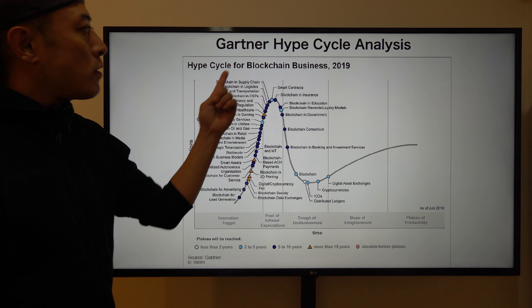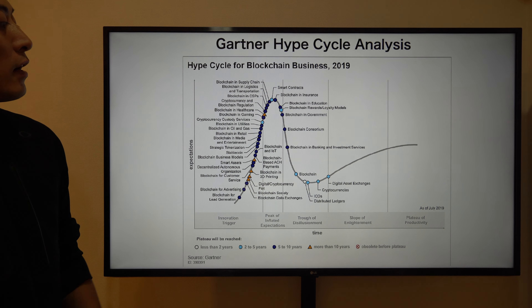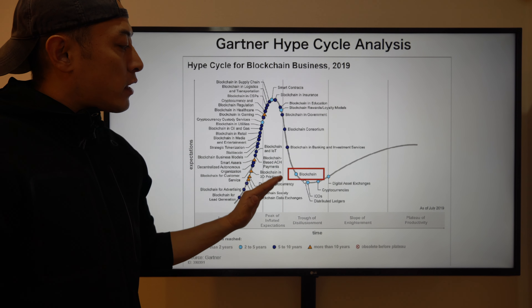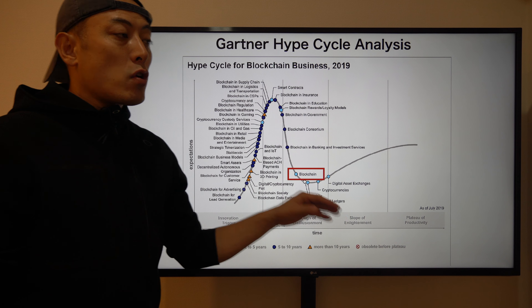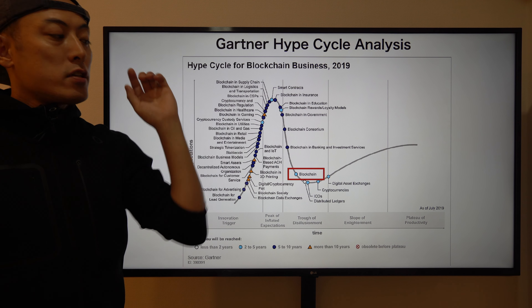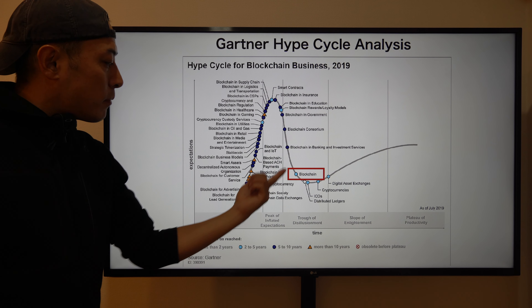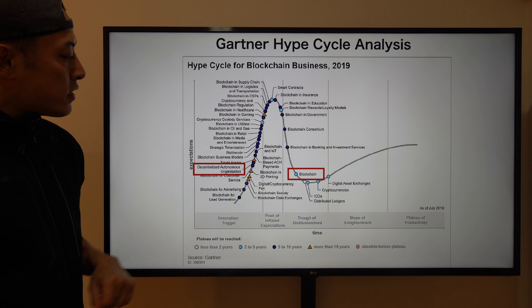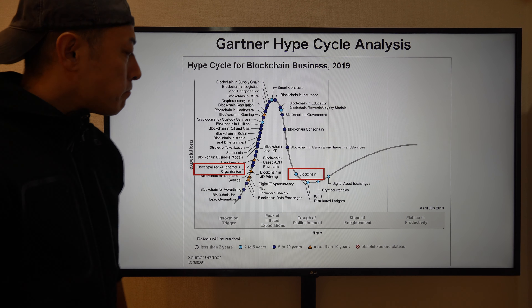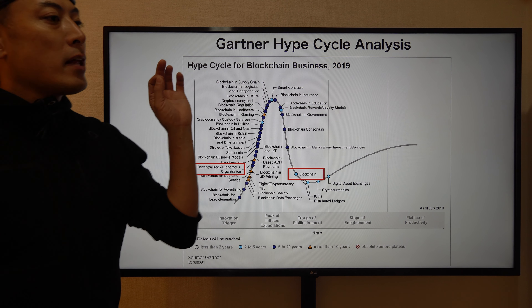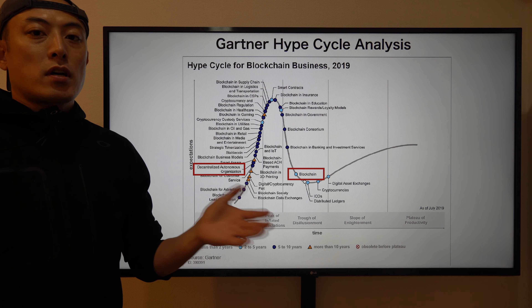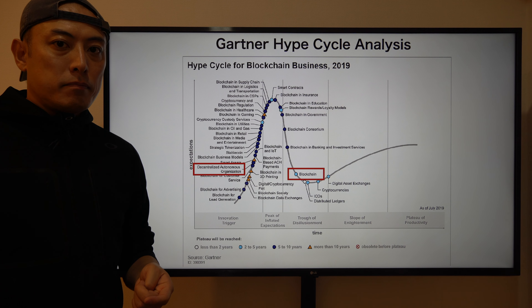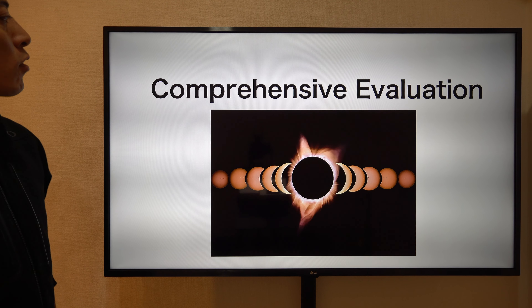Number six: hype cycle analysis. Using Gartner's hype cycle for blockchain business 2019, blockchain interoperability software is categorized in the blockchain category — close to real market applications. For blockchain interoperability software, a potential item is decentralized autonomous organizations (DAOs). However, Ardor's DAO mechanism is not competitive compared with Cosmos, so I can't see high potential for the DAO mechanism in Ardor at this moment.